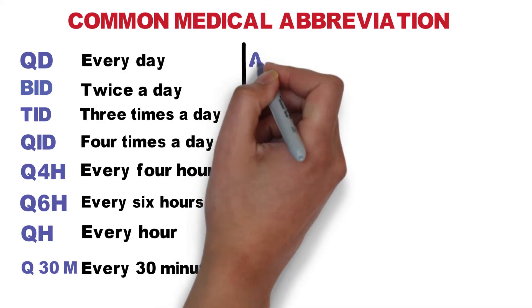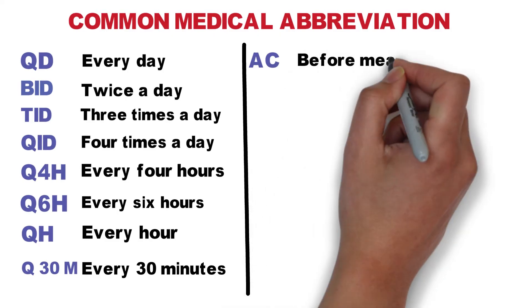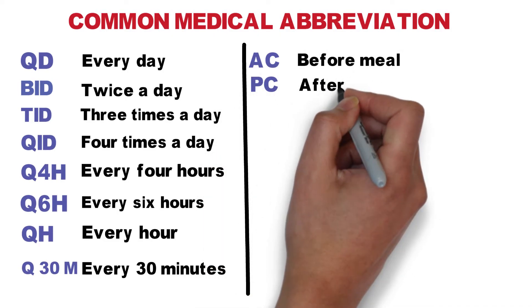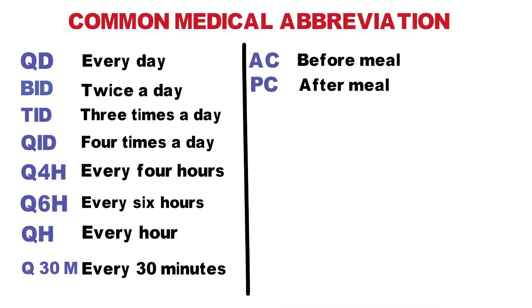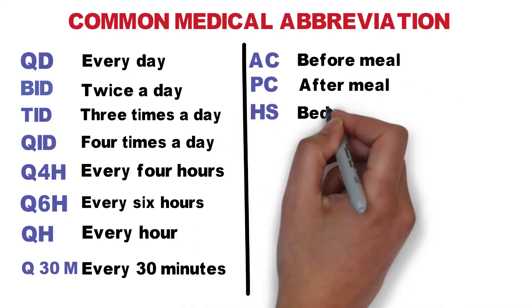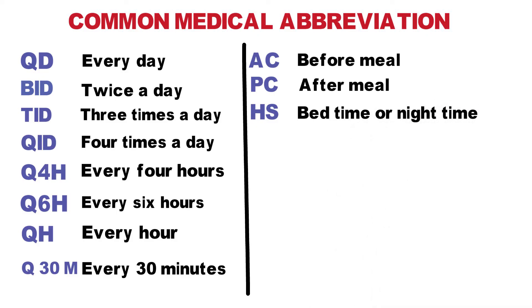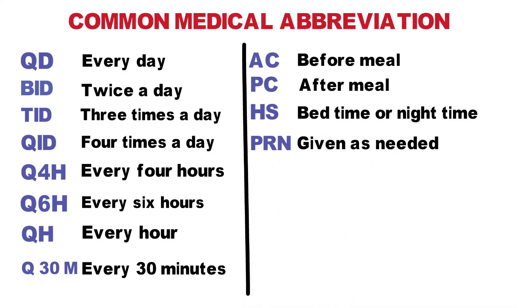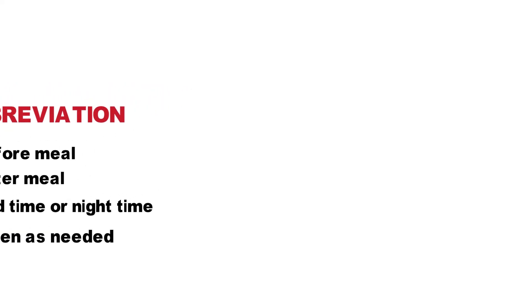The next one is AC, which means before a meal, and PC means after a meal. Now HS means at bedtime or nighttime, so a medication might be given right before the person goes to bed. Then PRN, which is one of the very common ones, means given as needed. So if somebody needs a pain medication when they feel pain, you give it as needed.